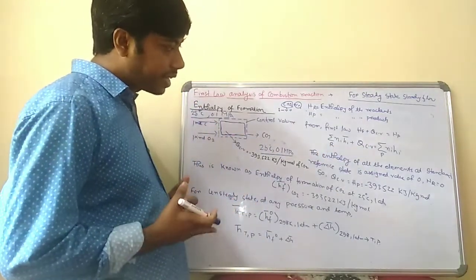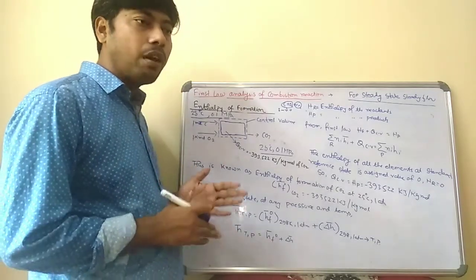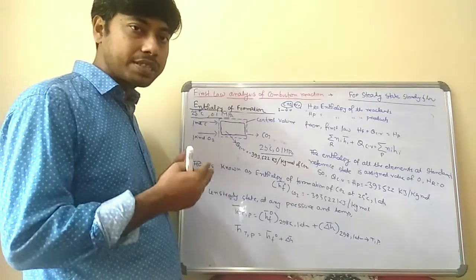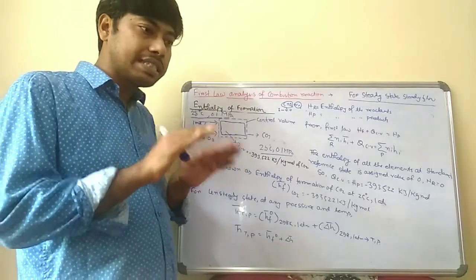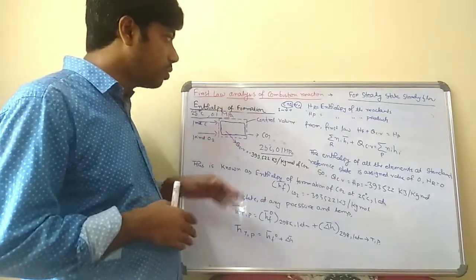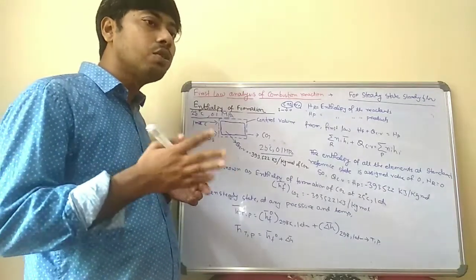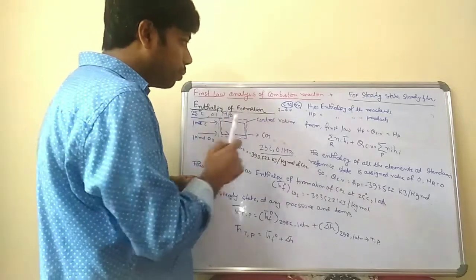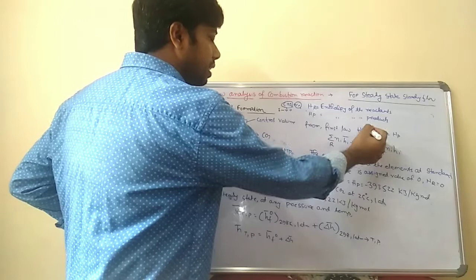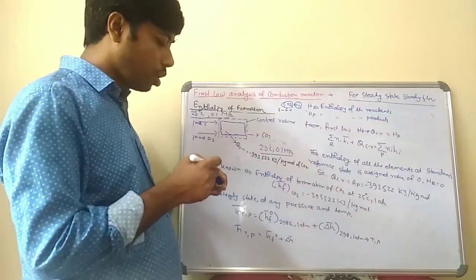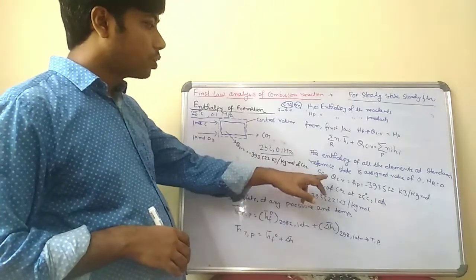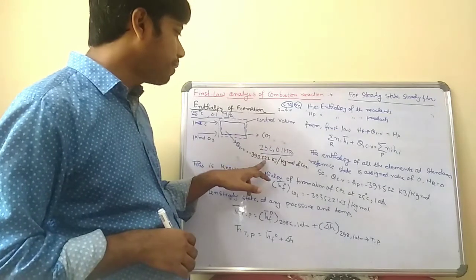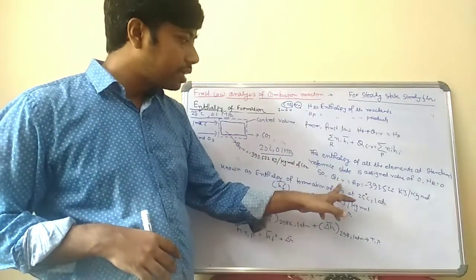As we know, the enthalpy of all elements at the standard reference state — where pressure is 1 atmosphere and temperature is 25°C — is assigned a value of zero. So carbon (C) and oxygen (O2) at standard reference state have enthalpy zero, meaning HR = 0. Since QCV is measurable at −393,522 kJ per kg-mole of carbon dioxide, we get QCV = HP, so HP = −393,522 kJ/kg-mole.